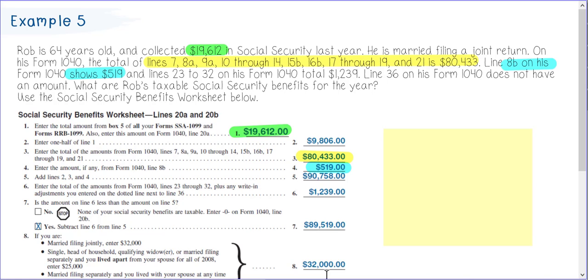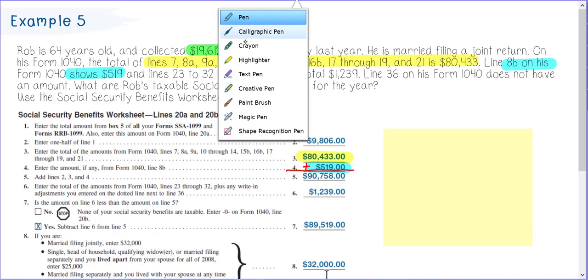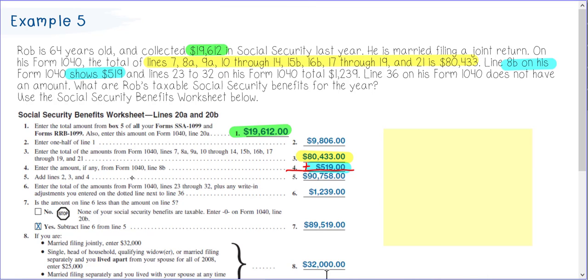Add lines 2, 3, and 4 to get a total for line 5. Then enter the total amounts from Form 1040 lines 23 through 32. On his form, those lines had a total of $1,239.